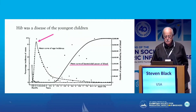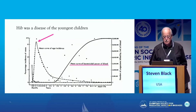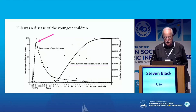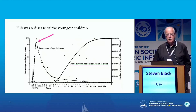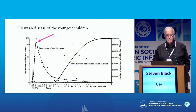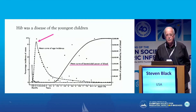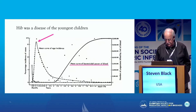This was the disease of the youngest children. You can see the arrows pointing here to the peak disease incidence in the first months of life. The other curve on the right shows the bactericidal antibody to Haemophilus influenzae type B. Clearly, antibody was providing protection, but the antibody was not present in the first months of life.